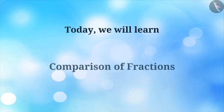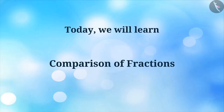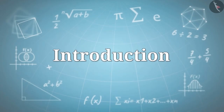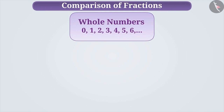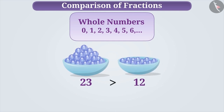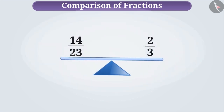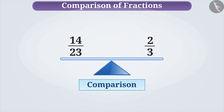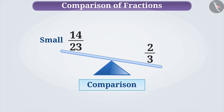Today, we will learn comparison of fractions. In general, we can easily compare whole numbers. For example, 23 marbles are more as compared to 12 marbles. But comparing fractions is not easy. For instance, 14 by 23 may appear greater than 2 by 3, but in reality it is smaller. To find out which fraction is smaller and which is greater, it is necessary to understand how to compare fractions.